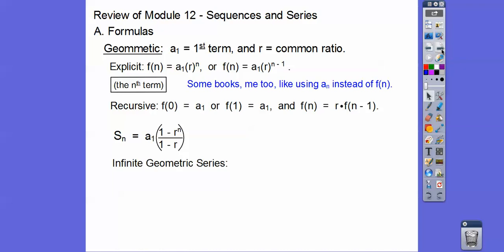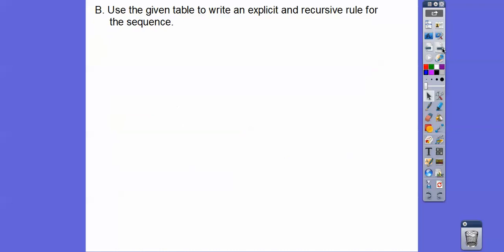For the infinite geometric series, if the absolute value of r is less than 1, then it has a sum — it converges to the first term over (1 minus r).